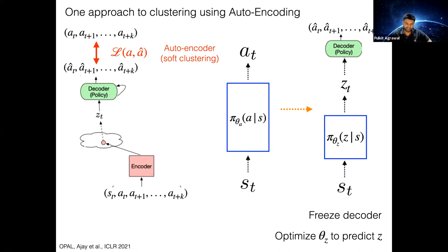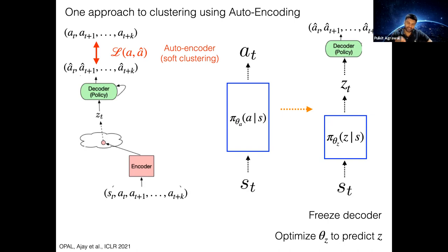Another question: in this method, do you roll out all the actions predicted by the decoder and wait for t+k to evaluate again? In the formulation described, yes — you wait to roll out everything. There are variants where you can train both the decoder and z simultaneously, but for now assume the decoder is fixed and only z is trained.